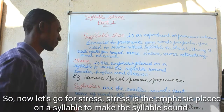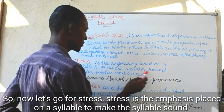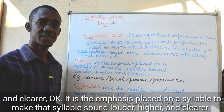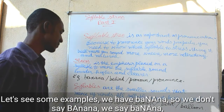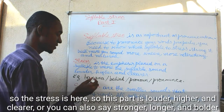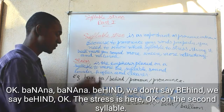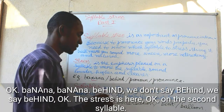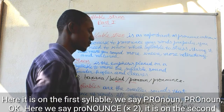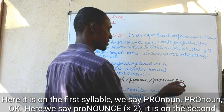So now let's go for stress. Stress is the emphasis placed on a syllable to make that syllable sound louder, higher and clearer — or you can also say stronger, longer and bolder. Let's see some examples. We have 'banana' — we don't say 'BAnana', we say 'baNAna', so the stress is on the second syllable, which is louder, higher and clearer. We have 'behind' — we don't say 'BEhind', we say 'beHIND', okay, the stress is on the second syllable.